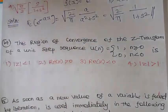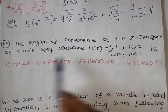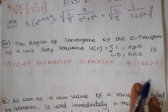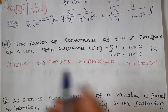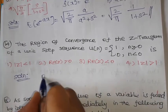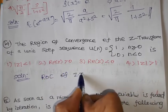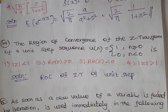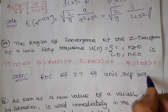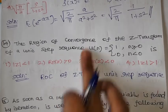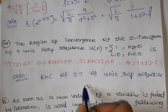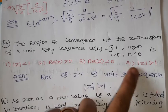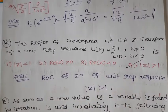Problem number 14: The region of convergence (ROC) of the Z-transform of a unit step sequence u(n), where u(n) = 1 for n ≥ 0 and 0 for n < 0. The unit step sequence is an infinite-duration right-handed sequence. The ROC of the Z-transform of the unit step sequence is |z| > 1. Option 4 is the correct answer.